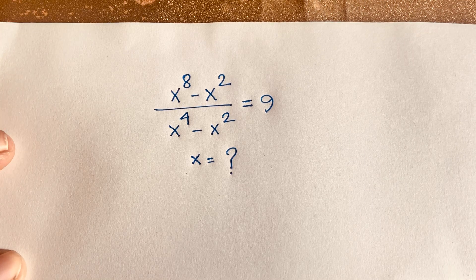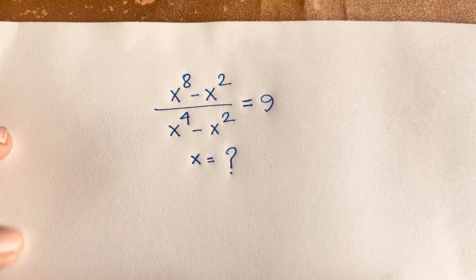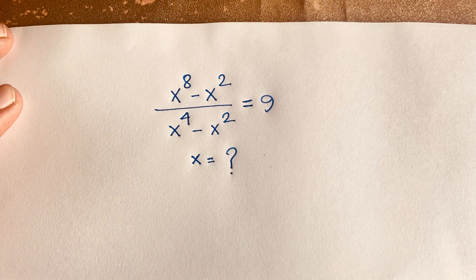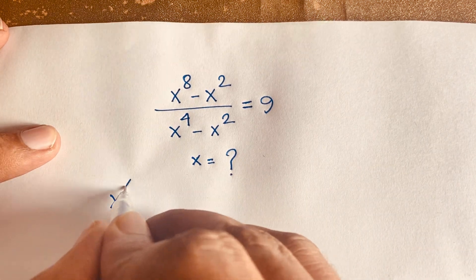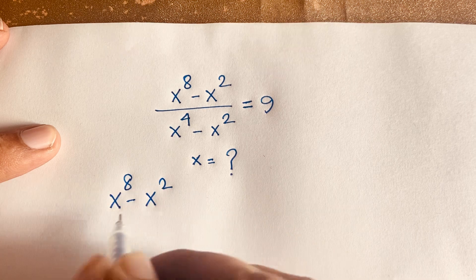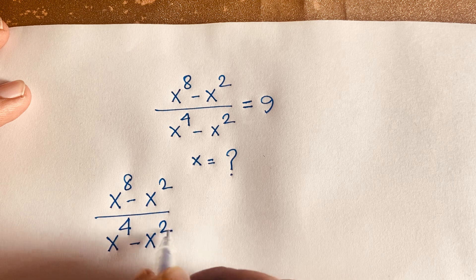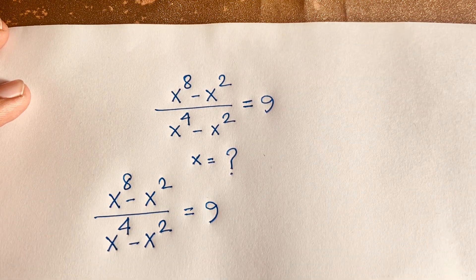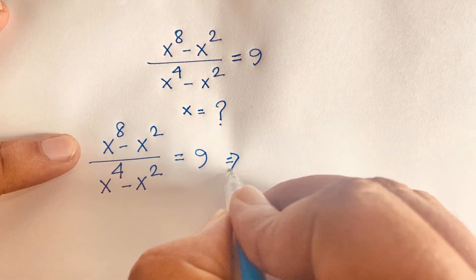Hello everyone. In this video we solve this interesting Math Olympiad question: x to the power 8 minus x squared, over x to the power 4 minus x squared, is equal to 9. What is x? How to solve this exponential equation? So our question is: (x⁸ - x²) / (x⁴ - x²) = 9.